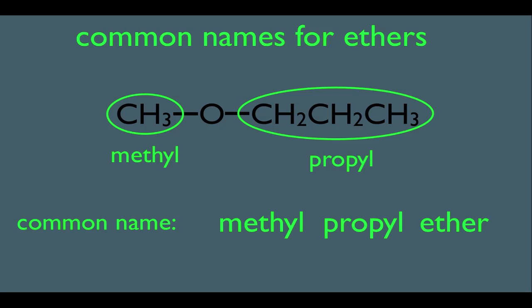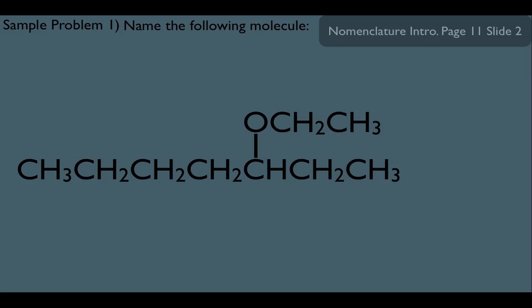However, for the rest of this lecture, we're going to stick to the IUPAC method. So let's look at another example here. Name the following molecule. Notice we can see that it is an ether. We have two alkyl groups on opposite sides of an oxygen.